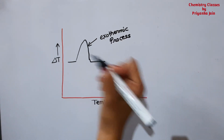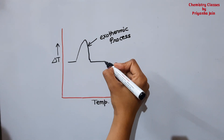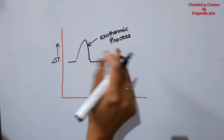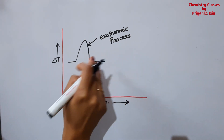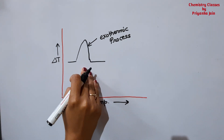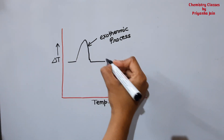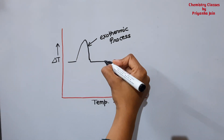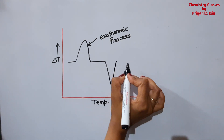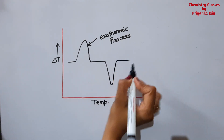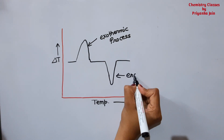When the substance undergoes melting, it will absorb heat and its temperature will decrease relative to the reference, so we get a negative peak — this is for the endothermic process.